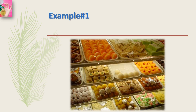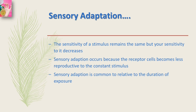Another definition: sensory adaptation is a phenomenon in which there is a gradual decline in sensitivity to a constant stimulus. For example, if you go into a sweet meat shop, the aroma of the freshly made sweets is quite strong and maybe enticing. If you were to stay for some time, you may no longer notice the smell. In reality, the intensity of the odor remains the same, but your sensitivity to it decreases.